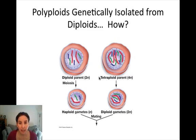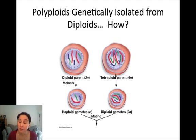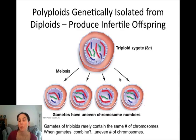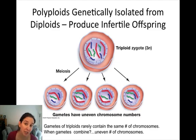If you take a tetraploid parent and a diploid parent, the diploid parent will produce haploid gametes, while the tetraploid parent will produce diploid gametes. These gametes can actually fuse, but the result is a triploid zygote — a cell with an odd and not an even number of chromosomes.